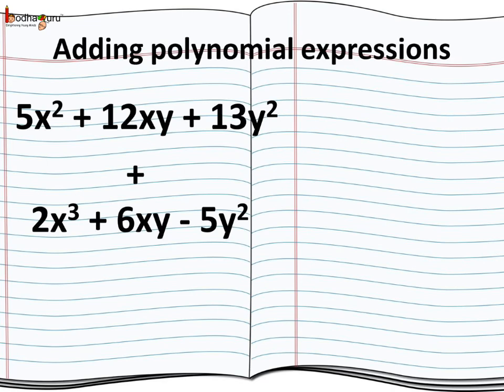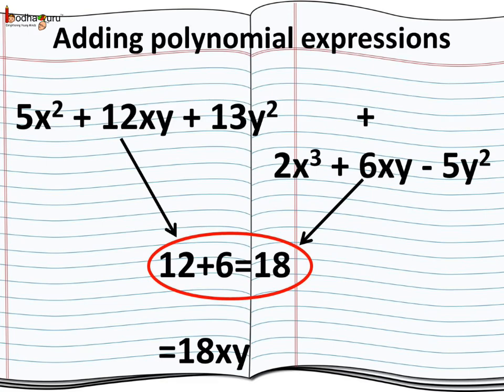Now how to add 2 polynomials? We can add the like terms. So let us add 5x² + 12xy + 13y² with 2x³ + 6xy - 5y². We add the like terms. So 12xy would be added to 6xy. Now 12 plus 6 is 18. So we get 18xy.